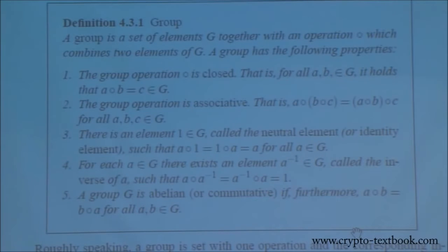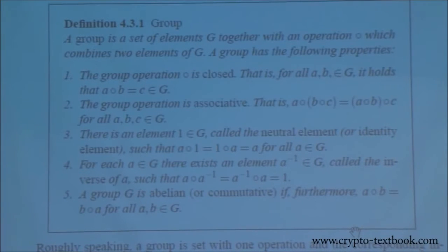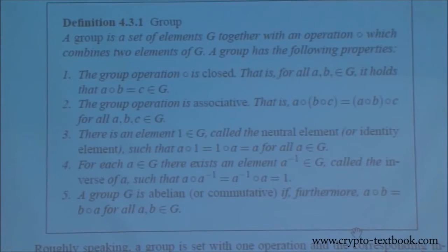Rule number three: there's a neutral element, the one element. If you have a multiplicative group, rule number four: you have an inverse element. So these are the four basic rules, and then you can also have a commutative rule.